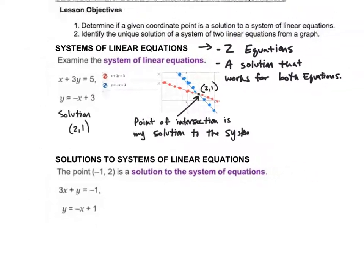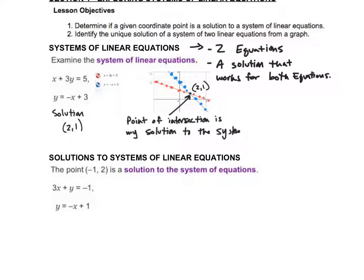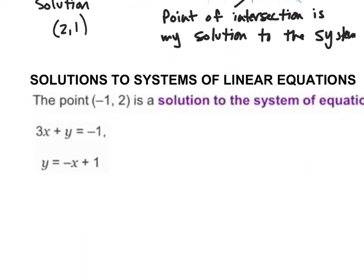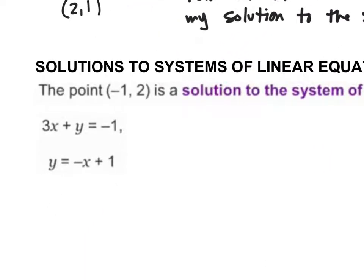So that's the first objective: we wanted to determine if a given coordinate point is a solution to a system of linear equations. I graphed this to show you how we get that. But what I want to do is take a look at how we determine that algebraically. The point negative one comma two is a solution to the system, and we want to verify that solution.